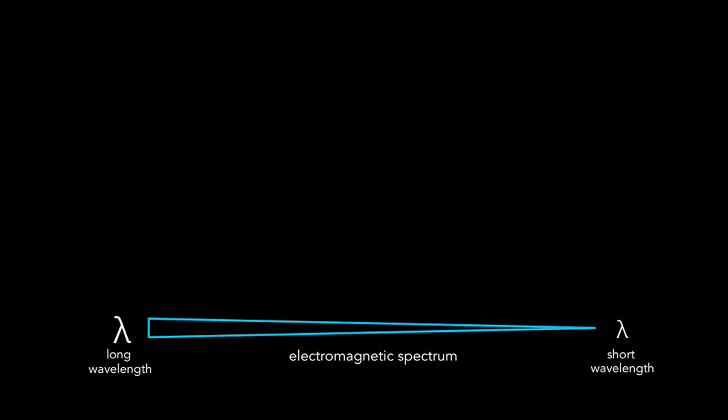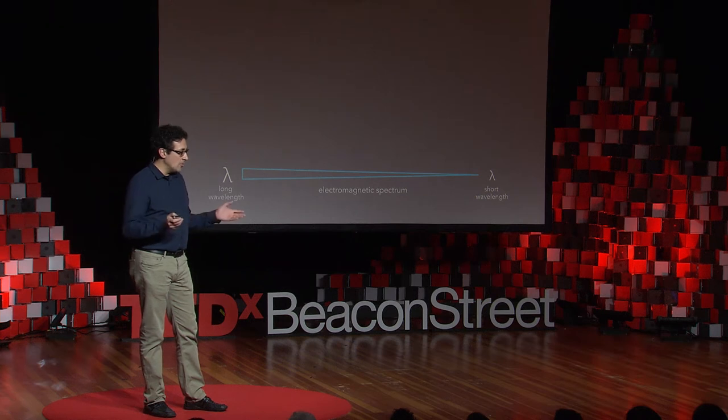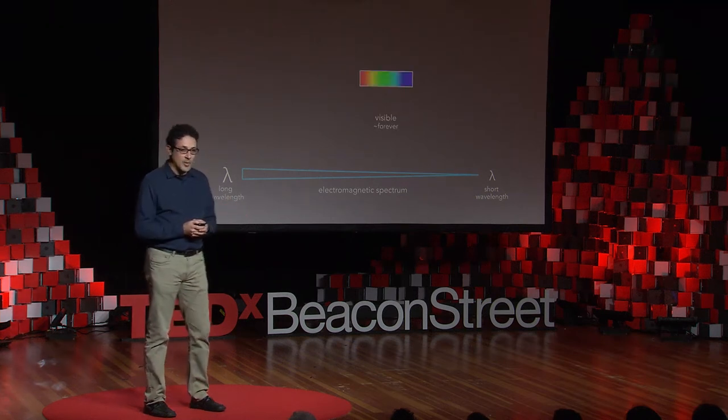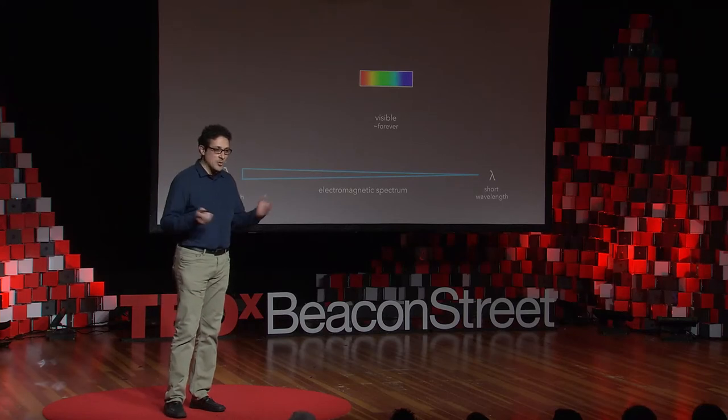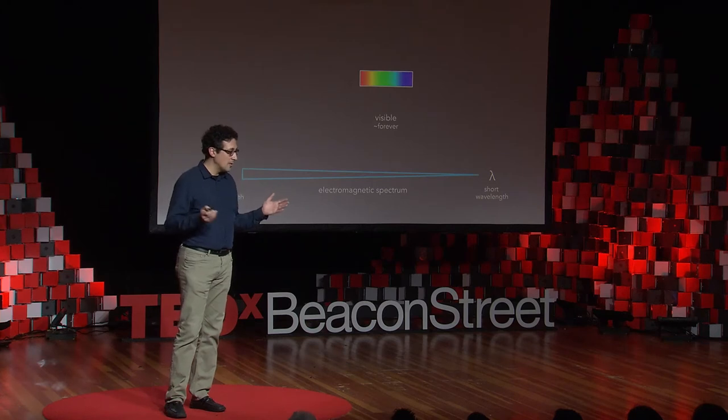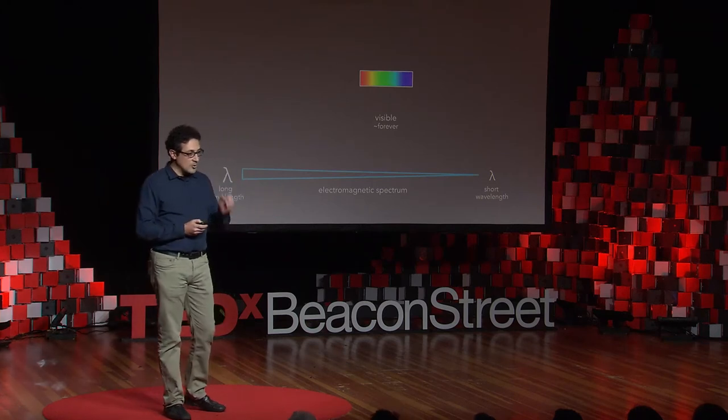I'm here today to introduce you to this new type of wavelength called terahertz. Terahertz is a part of the electromagnetic spectrum, which contains all available wavelengths in the universe. Visible light is also part of the electromagnetic spectrum, and we have been using visible light since the beginning of time to see the world around us and to study natural phenomena. However, visible light is only a small part of the electromagnetic spectrum. Our capability to see expanded in the 19th century, as new ways to capture different wavelengths were developed, and the nature of light itself was better understood.